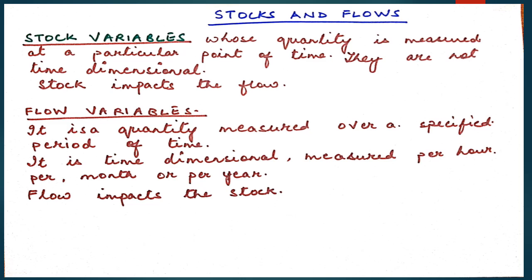Flow variables are those where quantity is measured over a specified period of time. They are time dimensional, meaning they can be measured per hour, per month, or per year. Just as stock impacts the flow, flow impacts the stock. An example of a flow variable is earning rupees 1000 as pocket allowance and spending rupees 50 in the canteen. The rate of interest on deposits and the water that flows in taps are all examples of flow variables.